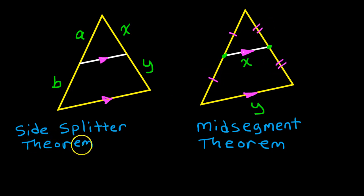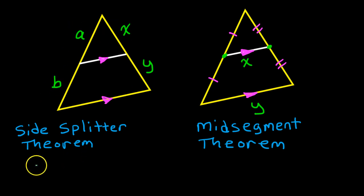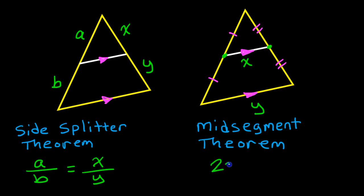For the side-splitter theorem, which does not require midpoints, you can notice that the segments are proportional — so A over B is equal to X over Y. For the mid-segment theorem, where you have midpoints being connected, the segment is half the size of the parallel side. In other words, if I double the mid-segment — the segment connecting midpoints — it should equal the other side.